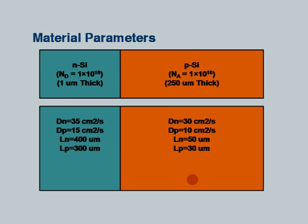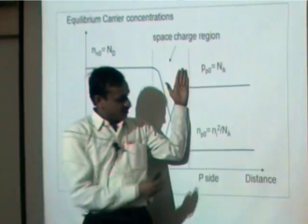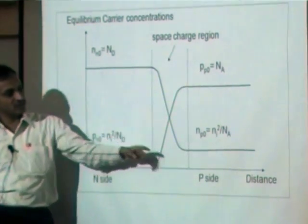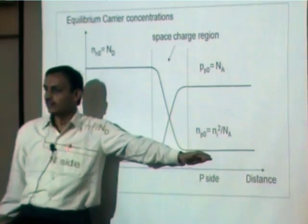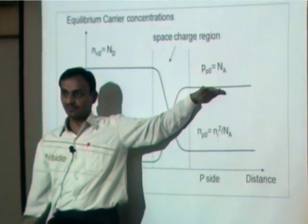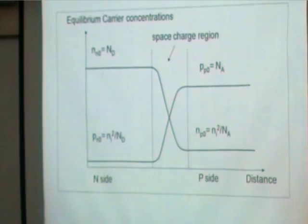Take a PN junction problem. On one side holes are majority, electrons are minority. On the other side, electrons which were minority become majority, and holes which were minority become majority. You know these numbers from the doping concentrations, so you find the two minority carrier concentrations using N0×P0 = Ni². Electron concentration is 10^19, so hole concentration on the N-side can be found from this.